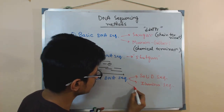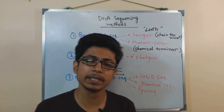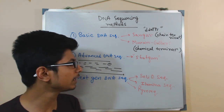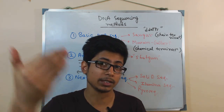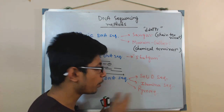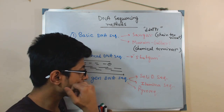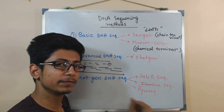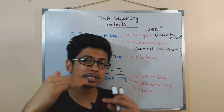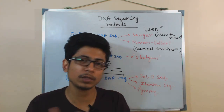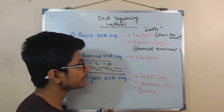Pyrosequencing uses fluorescently tagged dyes to detect nucleotide incorporation during DNA synthesis. The unknown genome is used as a template and polymerization proceeds; whenever a new nucleotide is incorporated, it produces a fluorescence signal. The fluorescence signal is directly proportional to the number of nucleotides added, and the identity of which nucleotide was added can also be determined from the signal.